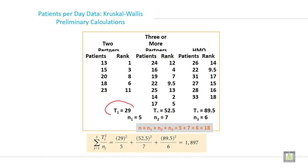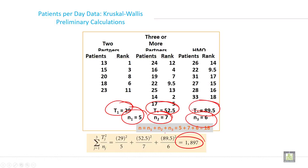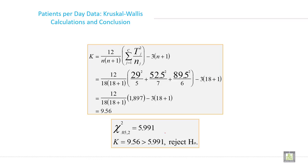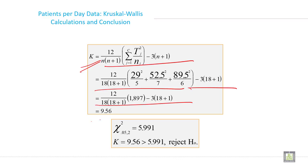For the two-partner group: T1 equals 29 and N1 equals 5. For the three-partner group: T2 equals 52.5 and N2 equals 7. For HMO: T3 equals 89.5 and N3 equals 6. The total N equals N1 plus N2 plus N3, which is 18. When you apply the Kruskal-Wallis formula with all the values, you get 1897 as an intermediate result, and the final calculated K value is 9.56.